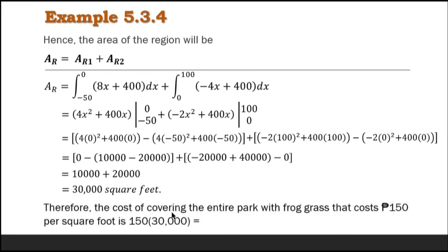Therefore, the cost of covering the entire park with Prague grass at 150 pesos per square foot is 150 times 30,000 equals 4,500,000 pesos. And that's it.